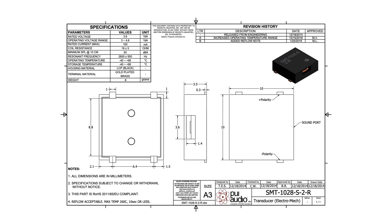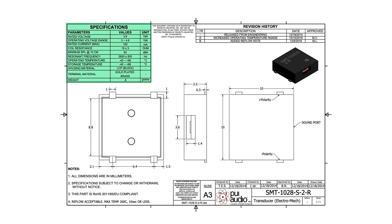Let's look at the data sheet from PUI Audio. You can see this is a spec sheet drawing style — very simple display, you just get the dimensions, revision history, and specifications. That's about it. It doesn't give you a whole lot of information on how to use it, how to interface with it, and that usually means that information is somewhere else on their page.